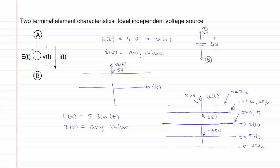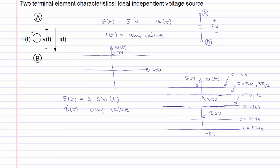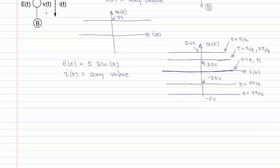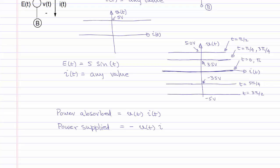The key idea is that the voltage of the source is known or specified, and the current through the source can be any value. Since V of t and I of t follow the passive sign convention, the power absorbed by the source is the product V of t times I of t. The power supplied by the source is the negative of the power absorbed, equal to minus V of t multiplied by I of t.